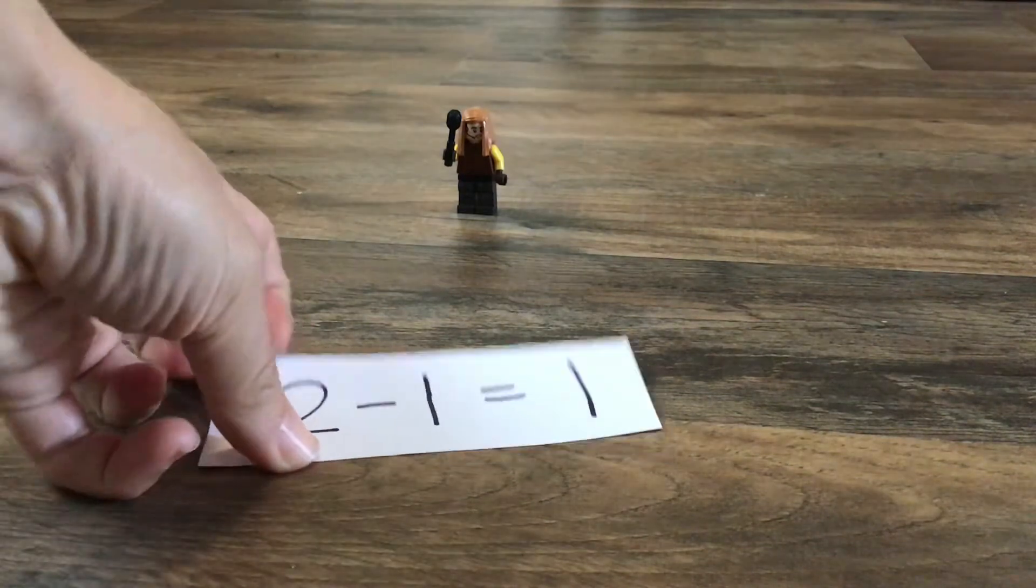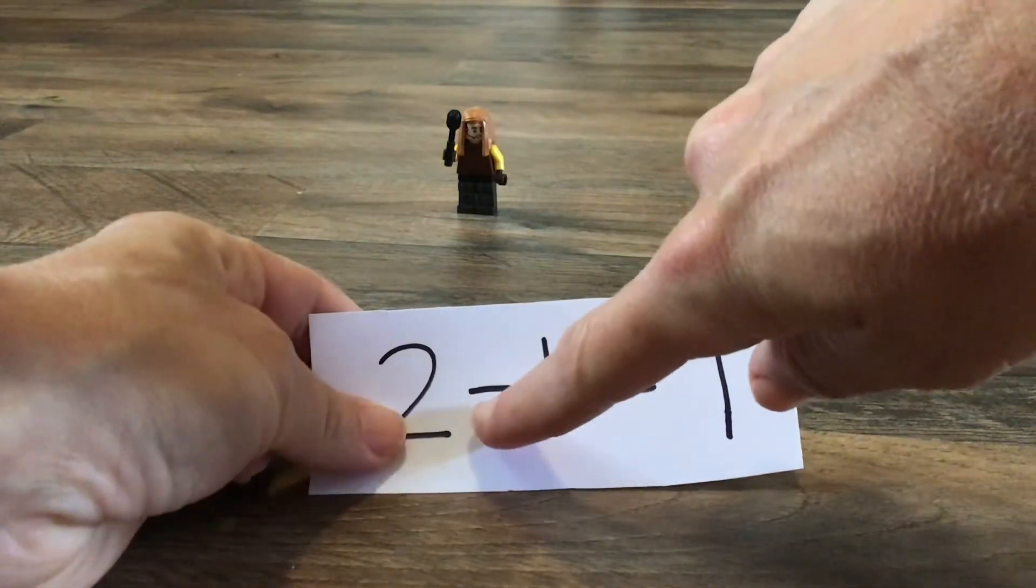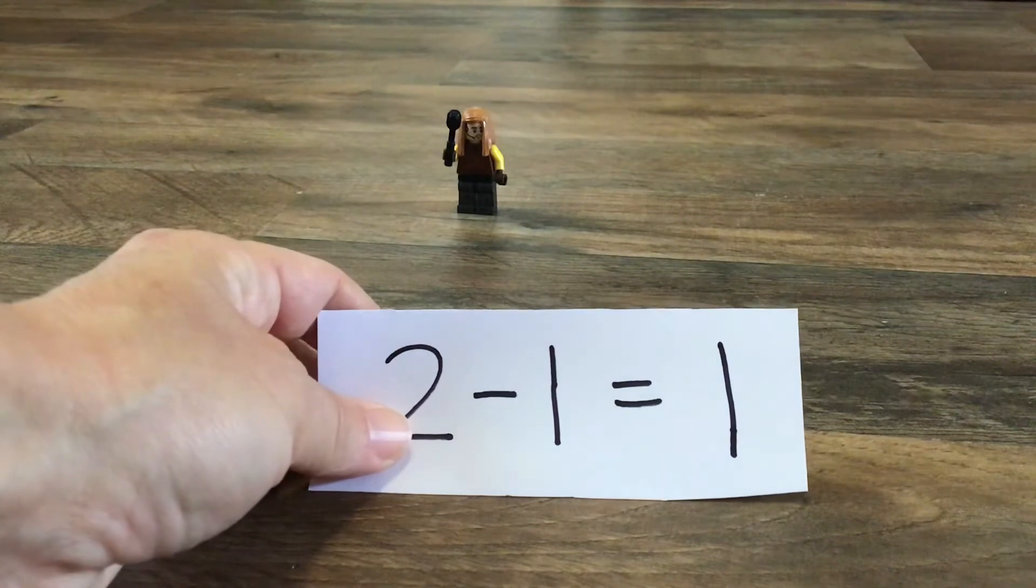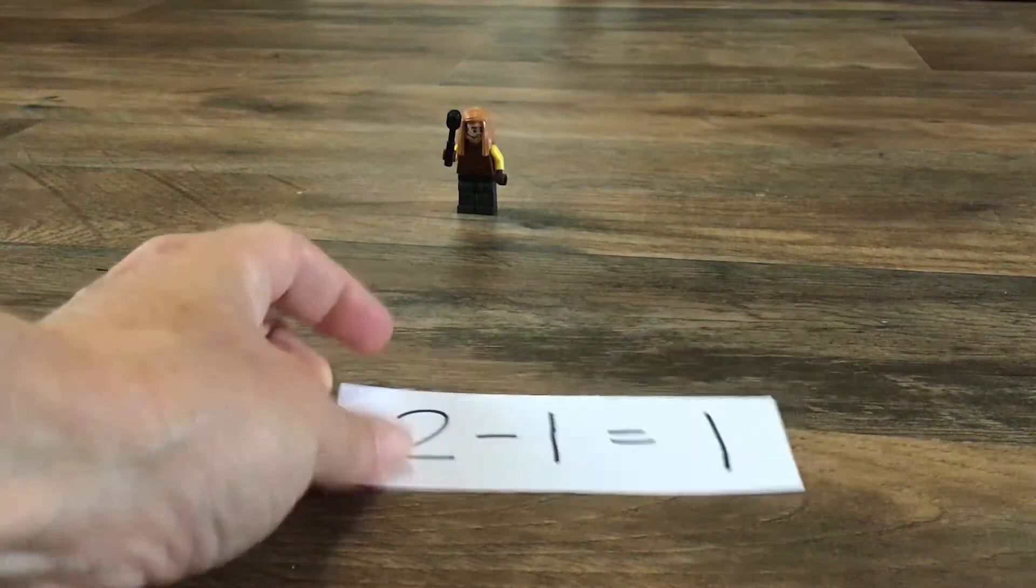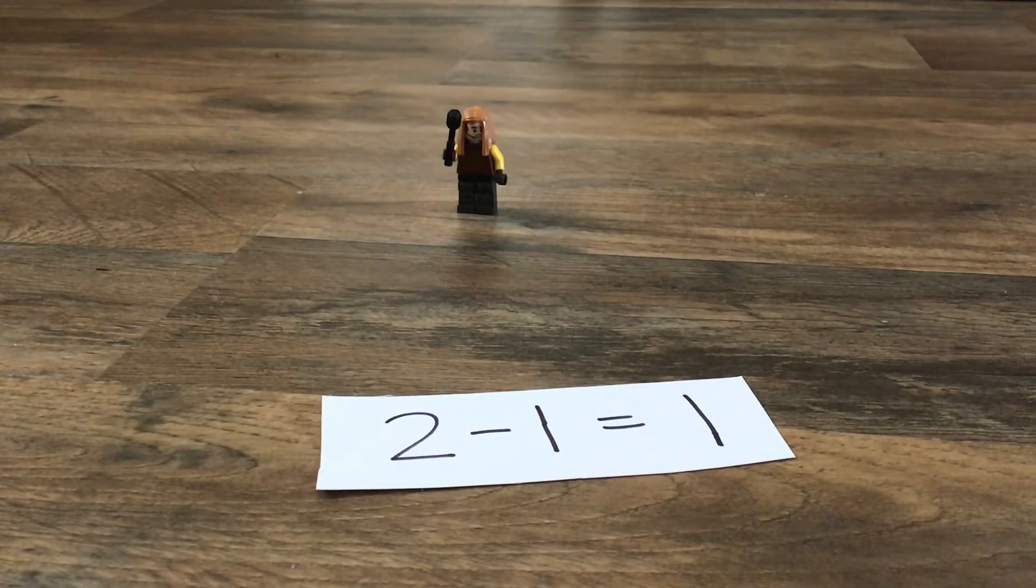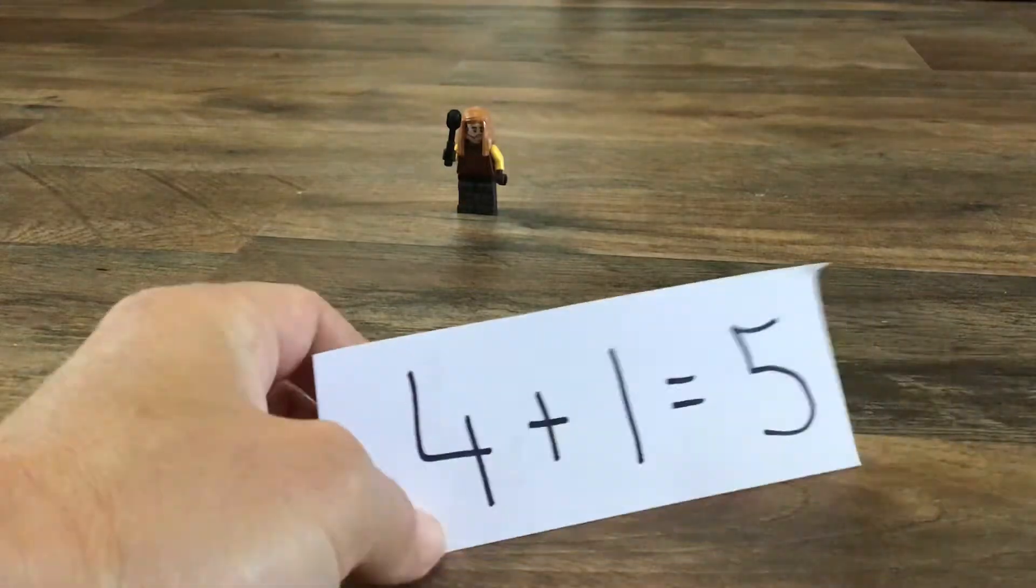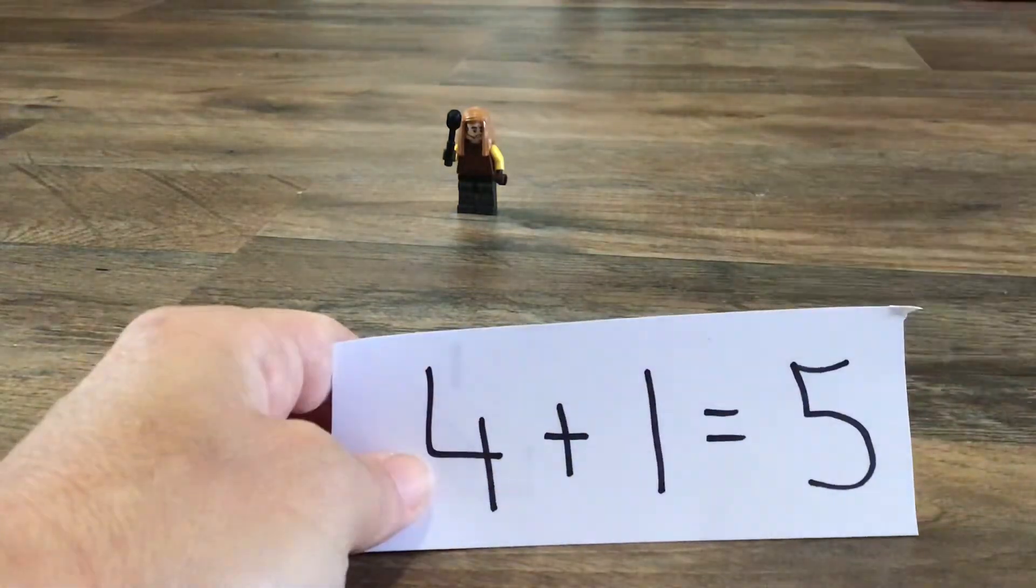Two, this little symbol right here, this one, that means minus. That means you're going to take something away. When we have a problem with a plus sign like this, that means we're going to add something. Right?